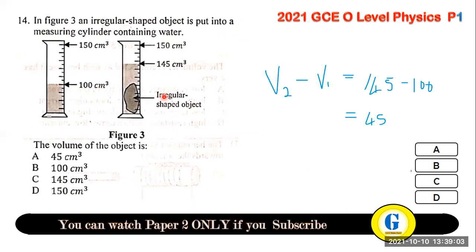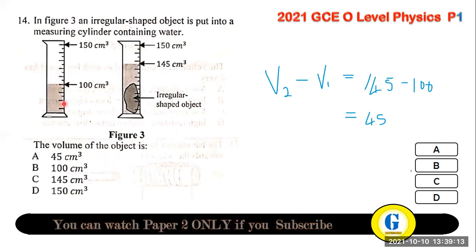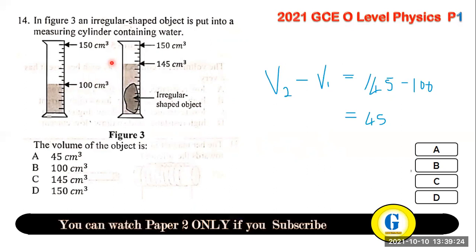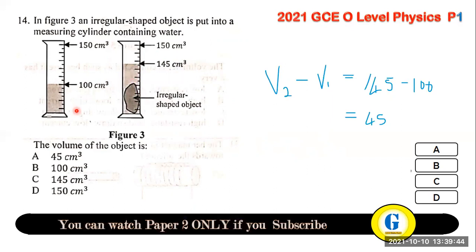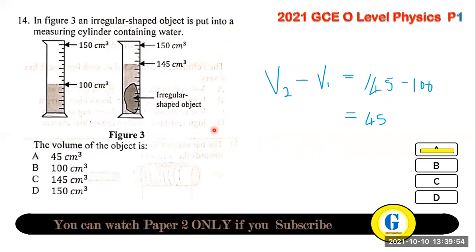Question 14: an irregularly shaped object is put into a measuring cylinder containing water. The initial volume V₁ was 100 cm³. After placing the object in, the new volume V₂ is 145 cm³. The volume of the object is V₂ − V₁ = 45 cm³.